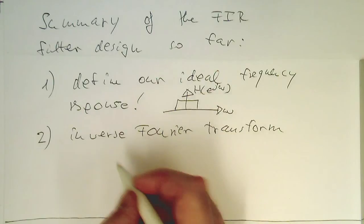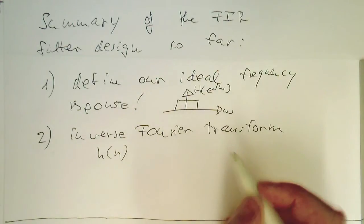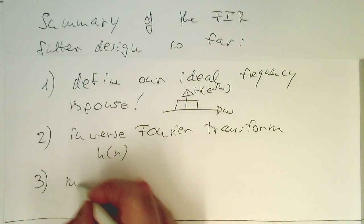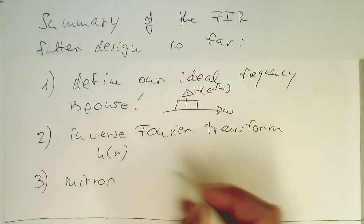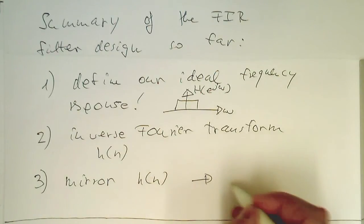The inverse Fourier transform gives us H(n). Then in step 3, we mirror H(n) so that we get a linear phase filter.